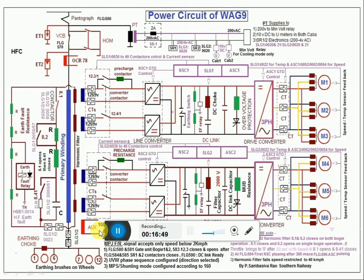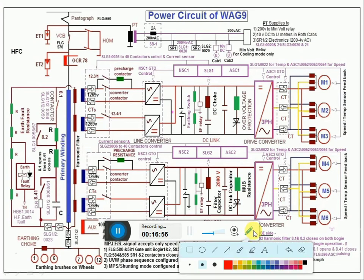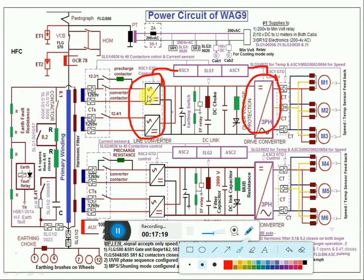Here we can see converter 1 and converter 2. Converter 1 has a line converter controlled by NSC and a drive converter controlled by ASC. The total SR — line converter, DC link, and drive converter — is controlled by SLG and ALG. Two traction converters: converter 1 will give supply to traction motors 1, 2, 3; converter 2 will give supply to traction motors 4, 5, 6.